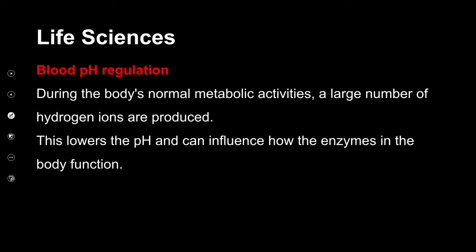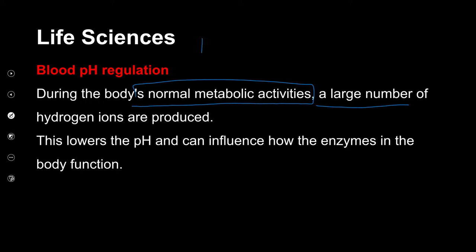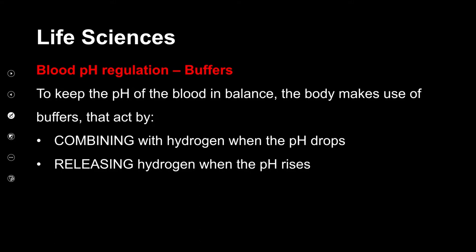While our body carries out its normal metabolic activities, large numbers of hydrogen ions are produced. So we've got lots of hydrogen, and when we've got lots of hydrogen, the result can be acidity. If our internal environment is not balanced — if the pH is not right — the body cannot function properly. So what happens when our pH goes too high or too low?